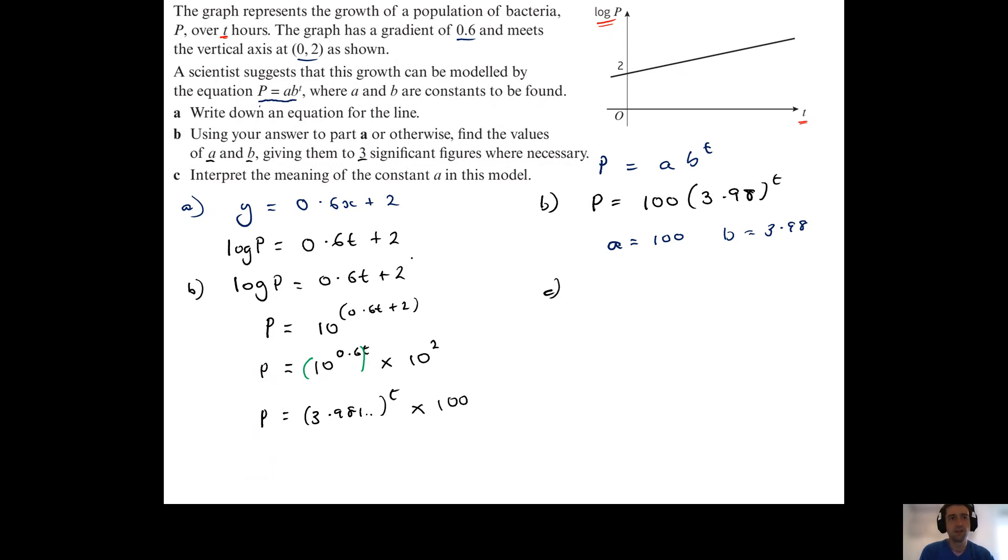Now in part c, I'm being asked to interpret the meaning of the constant a in this model. Well, this constant a here, which is the number 100...